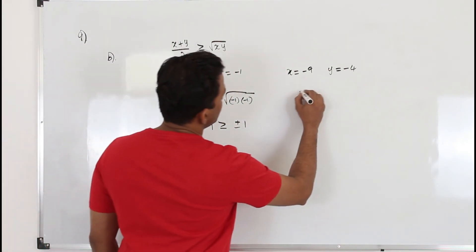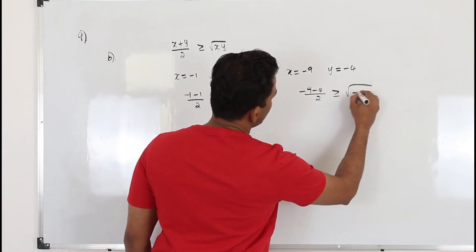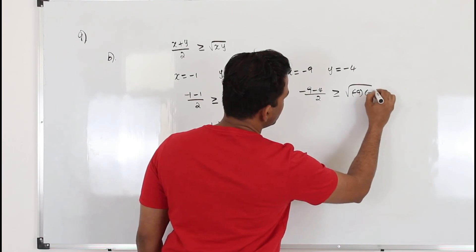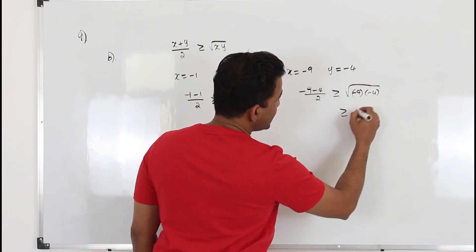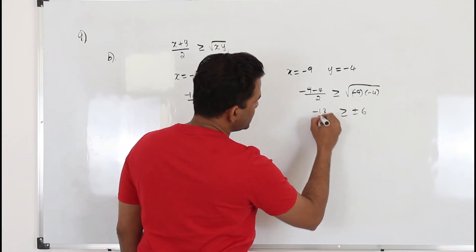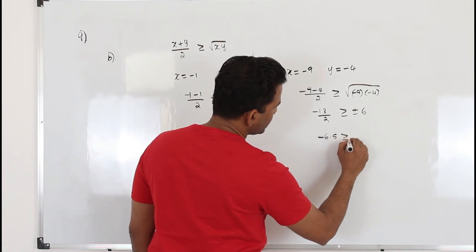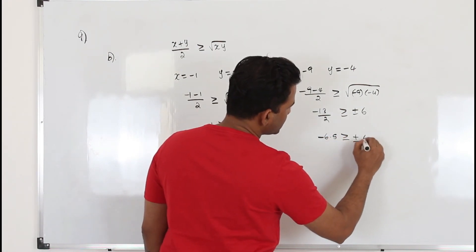Minus 9 minus 4 by 2 is greater than or equal to square root of minus 9 times minus 4, which is 36, plus or minus 6. Here minus 13 over 2, which is minus 13 over 2, minus 6.5. Plus or minus 6.